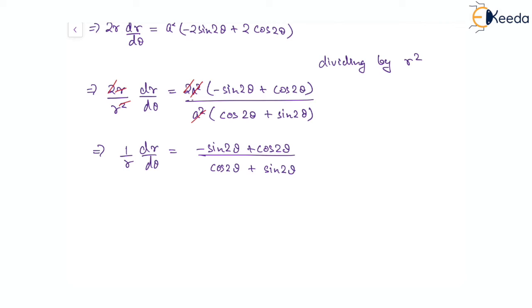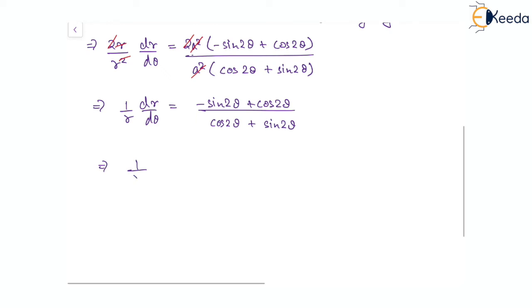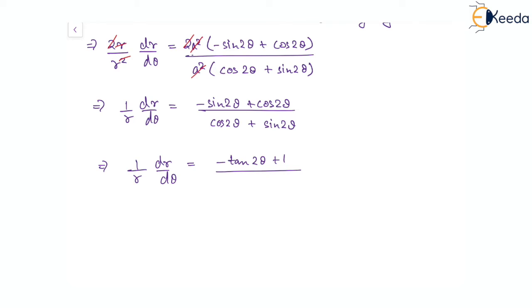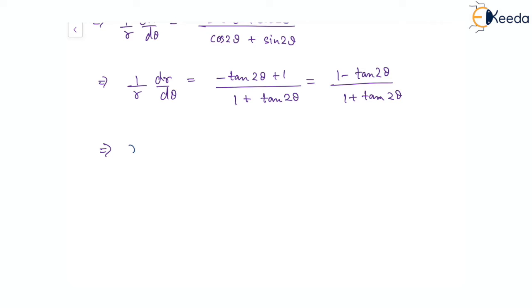If we divide everything on the right side — numerator and denominator — by cos2θ, we get (1/r)(dr/dθ) = (1 − tan2θ)/(1 + tan2θ). Rearranging, r(dθ/dr) = (1 + tan2θ)/(1 − tan2θ).